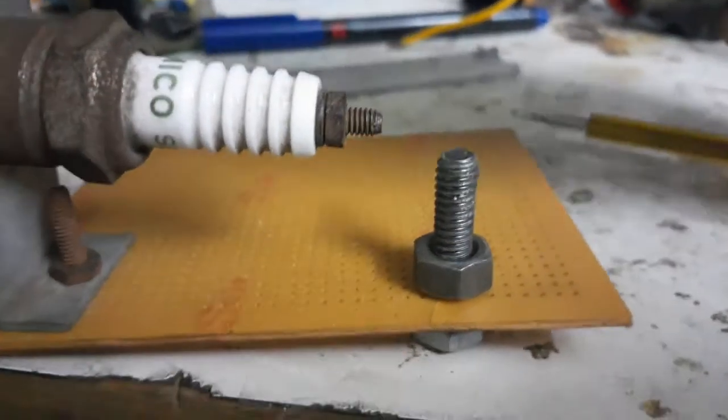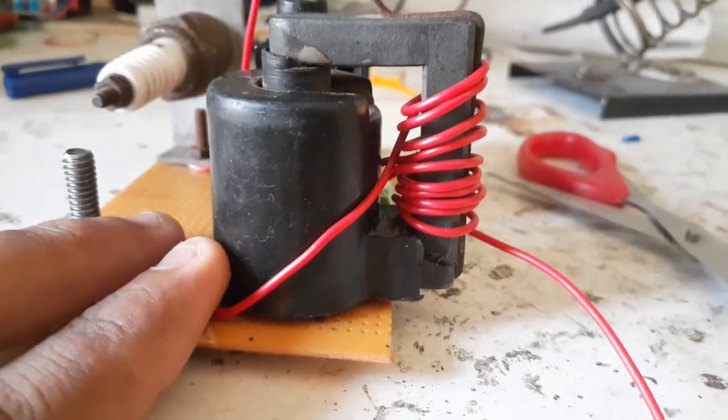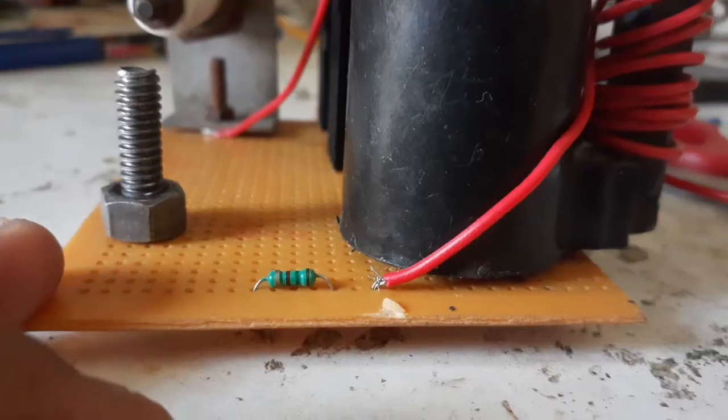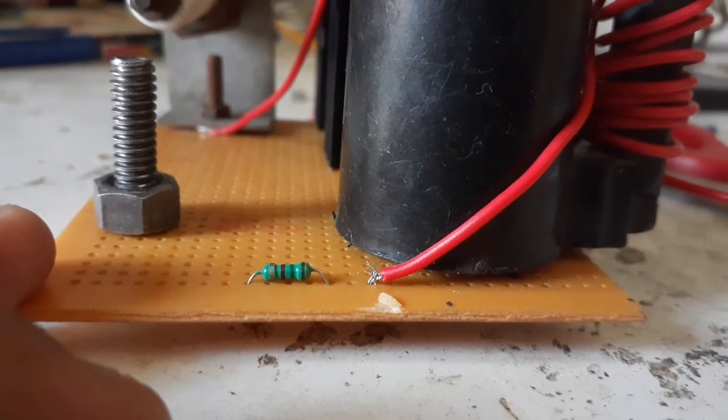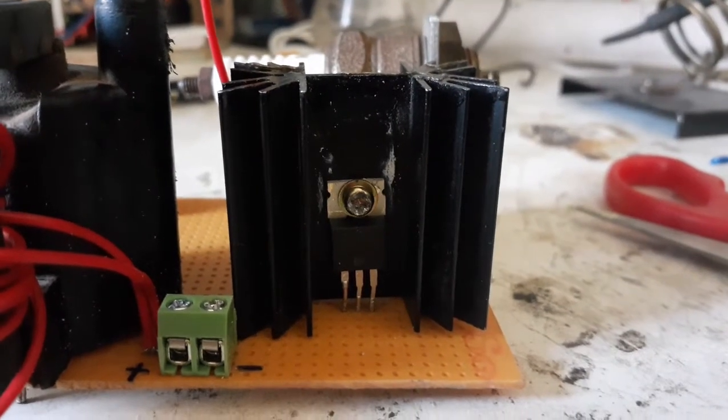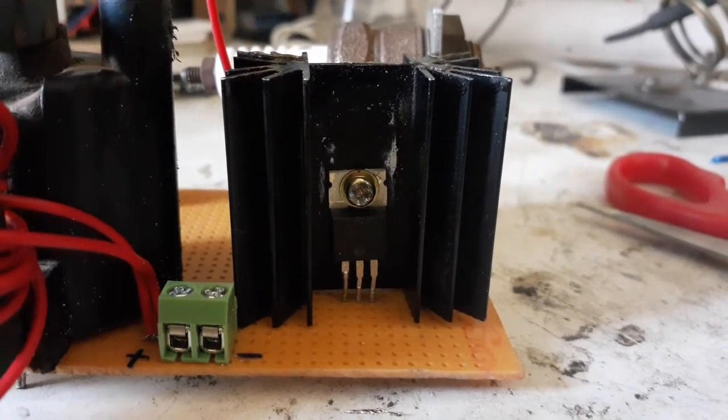So I started with arranging the screws and the raygun kind of thing in place, then the flyback transformer, the heatsinks with the MOSFET and resistors. Lastly I added the screw terminals to hook up the power which is around 12 to 15 volts to it.